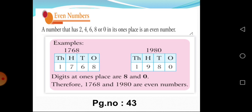So, a number that has 2, 4, 6, 8, or 0 in its one's place is an Even Number.